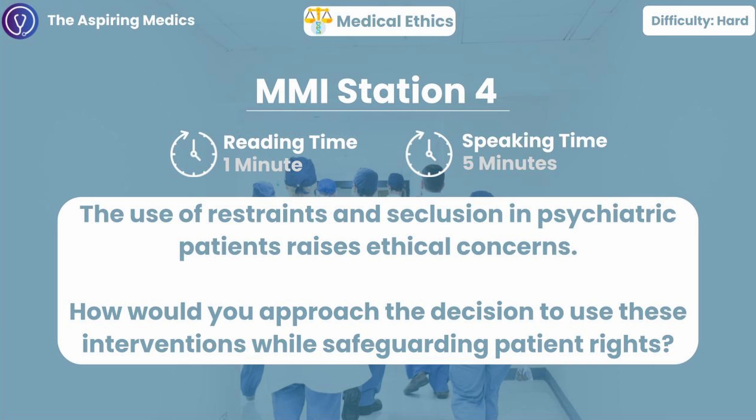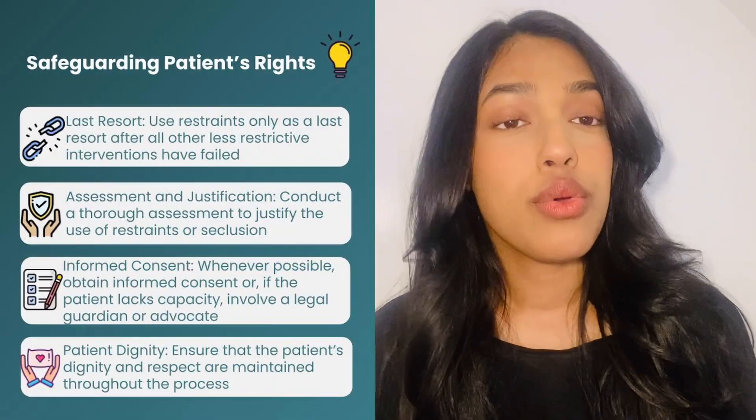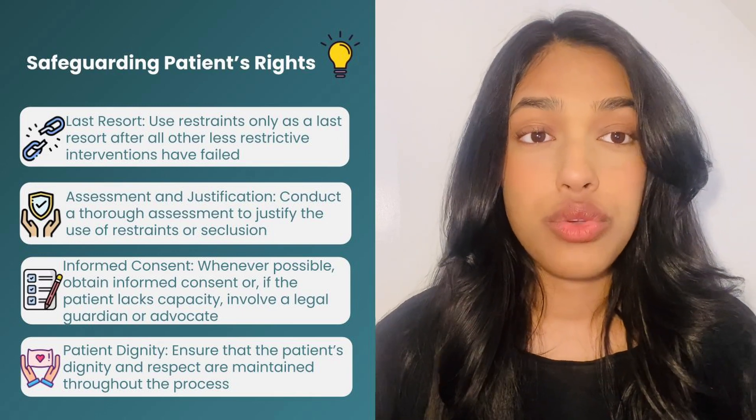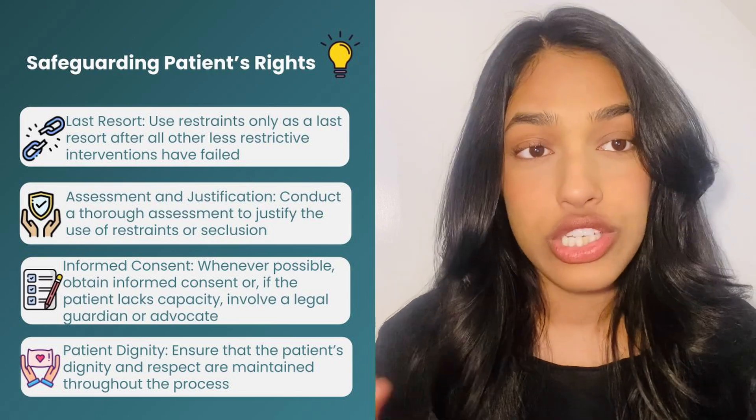The use of restraints and seclusion in psychiatric patients raises ethical concerns. How would you approach the decision to use these interventions while safeguarding patients' rights? Restraints are physical methods used to restrict the patient, and seclusion involves isolating the patient. It's important to consider autonomy, though in the context of psychiatric patients, autonomy may be compromised by the patient's mental state. Before any decision to use restraints or seclusion is made, the individual should be assessed for capacity, and where possible the patient should be involved in decision-making and their consent sought.